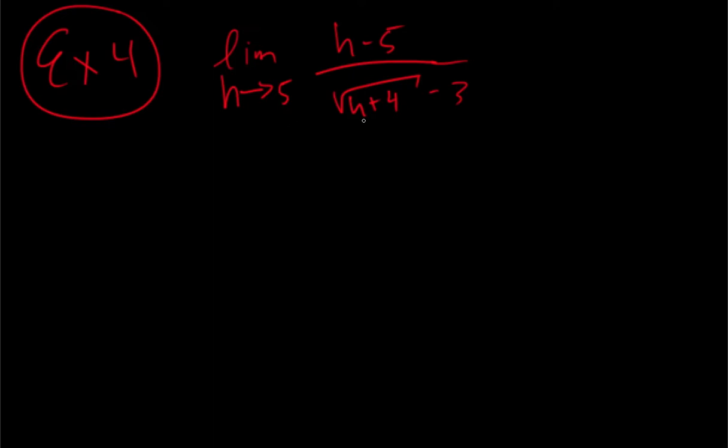Okay, problem with this one, if we plug in a five here, five plus four is nine, square root of nine is three, three minus three is zero. And if we plug it in here, we have zero over zero, which means we can't use substitution.